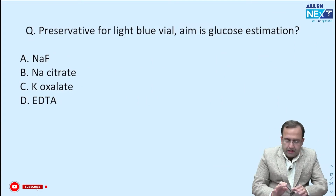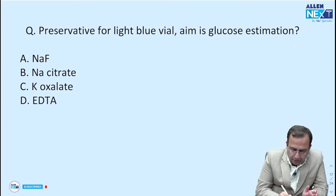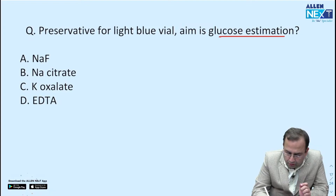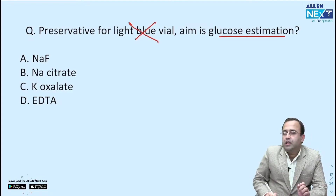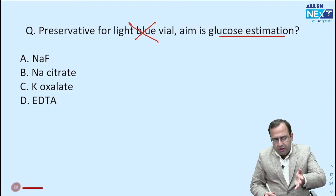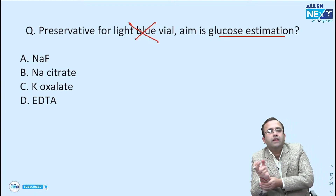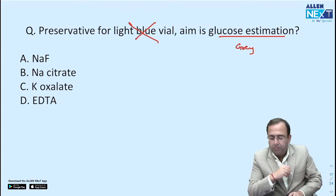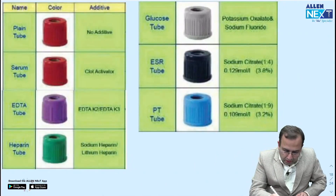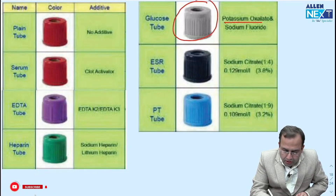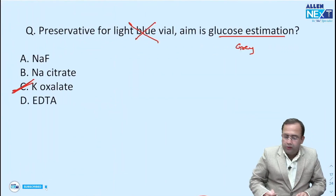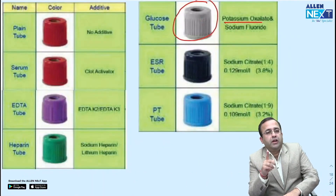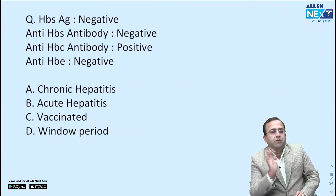Next — preservative for light blue vial, aim is glucose estimation. When we talk of glucose estimation, we do not use a light blue vial. I cannot explain why the examiner wrote light blue vial. Glucose estimation is performed by gray top, where potassium oxalate is the anticoagulant used. We have sodium fluoride in it also, but it is to inhibit glycolysis. The answer was potassium oxalate.